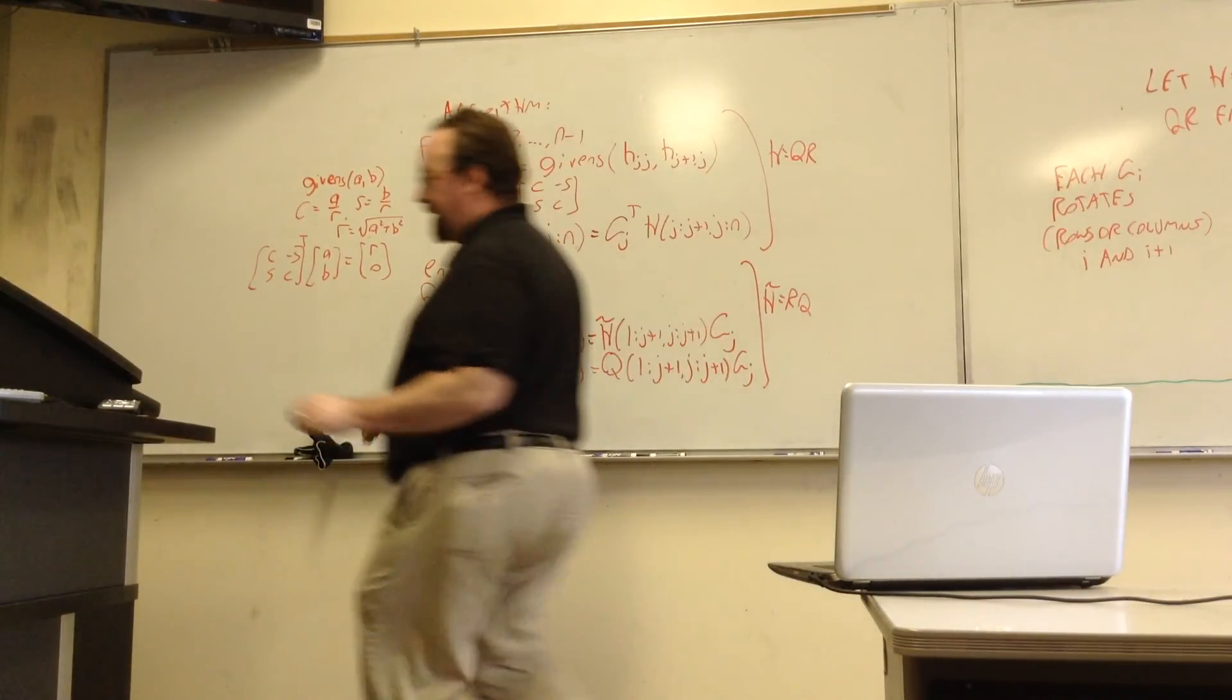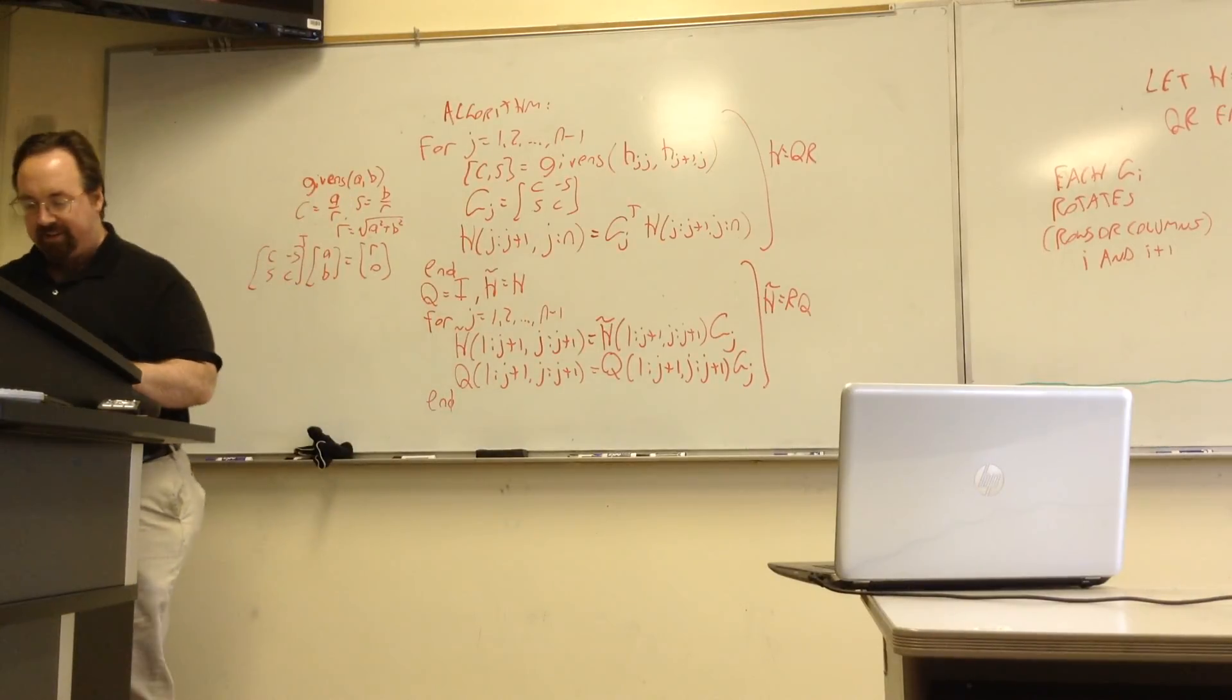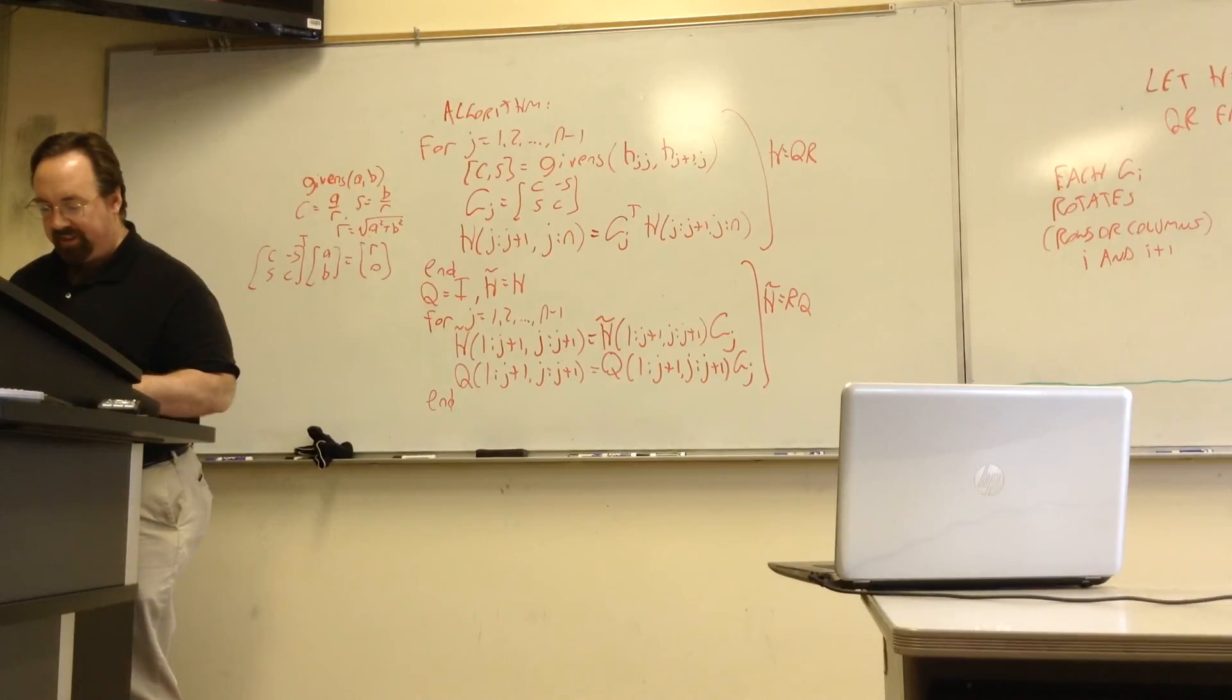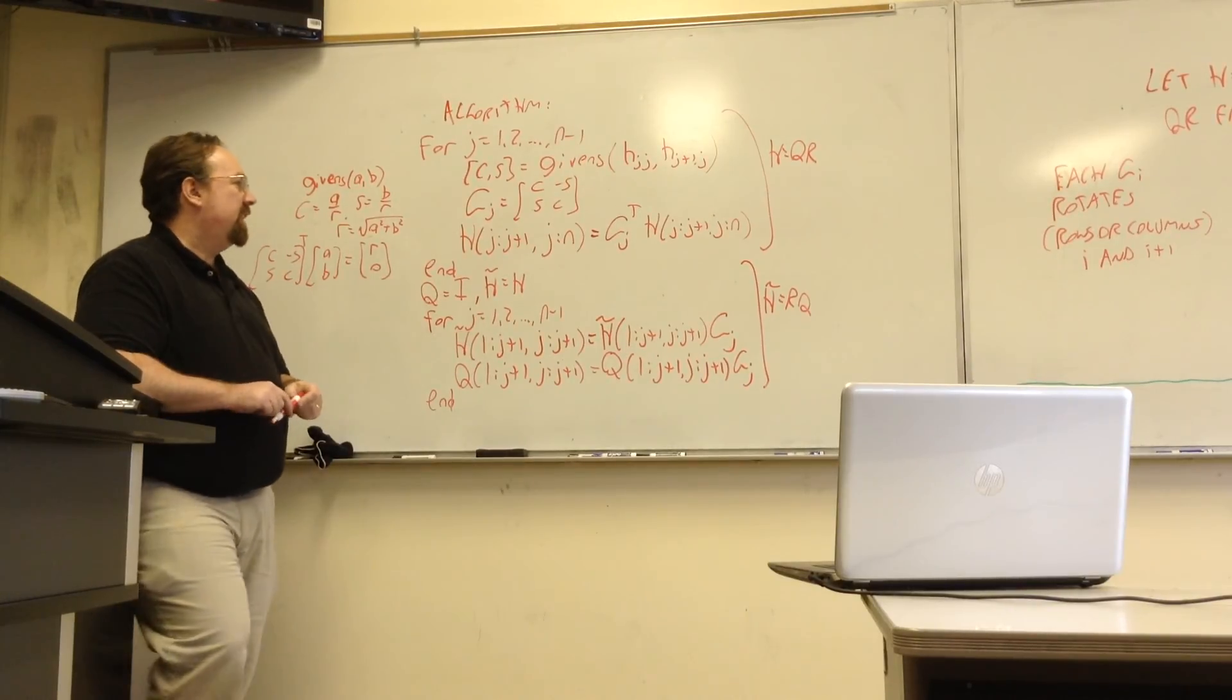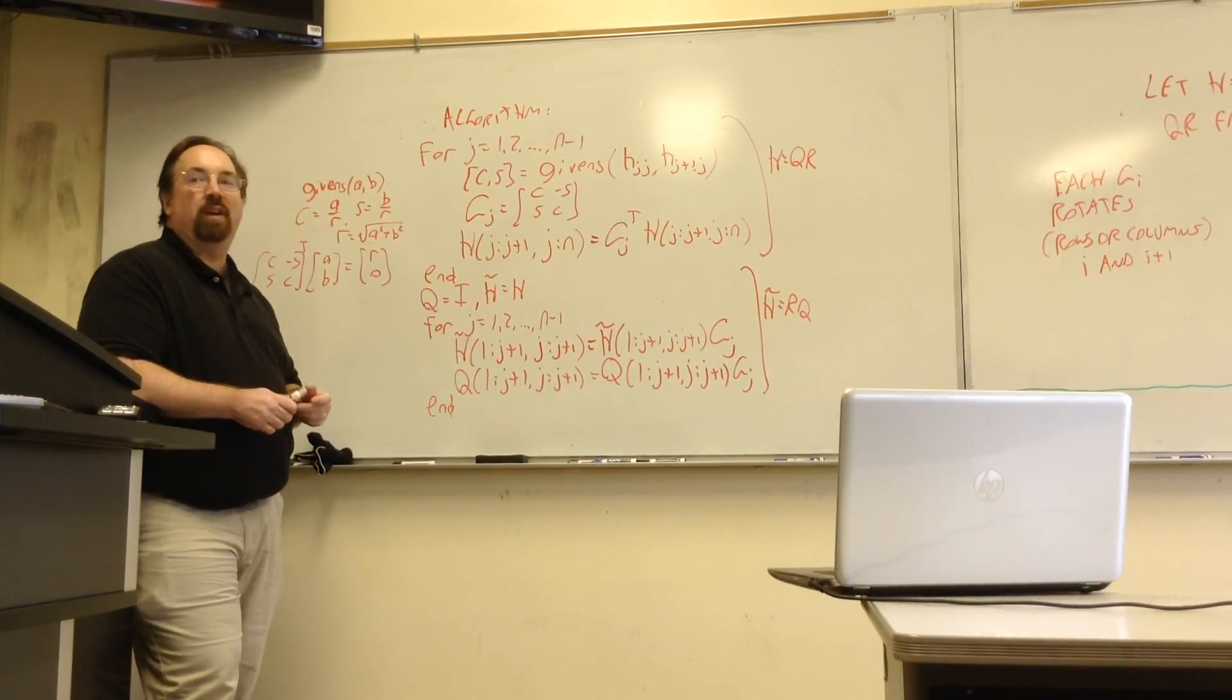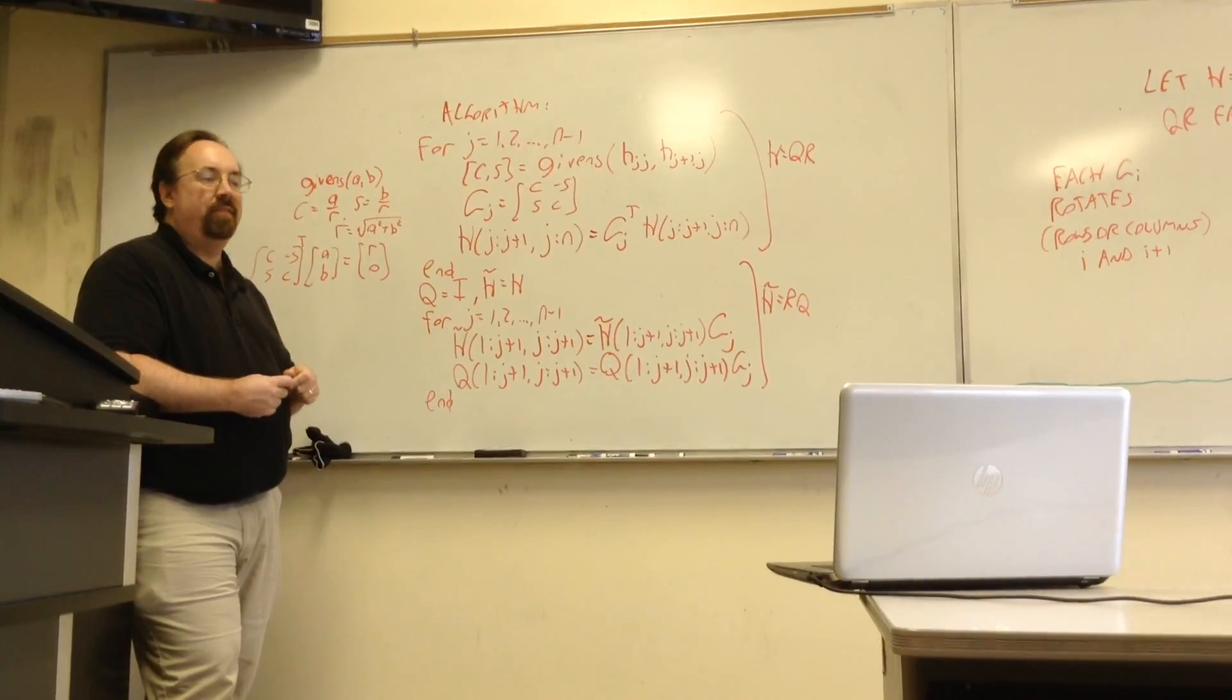So now we know how to make each iteration faster. And so what we'll start with next time is how we get a general matrix A to a Hessenberg form in the first place. So we'll pick up on that on Wednesday. Okay. Thank you.